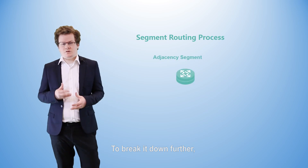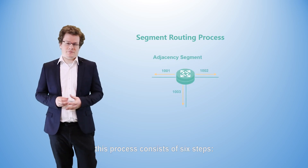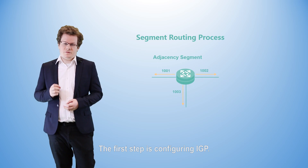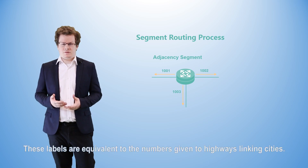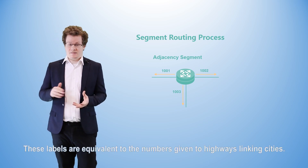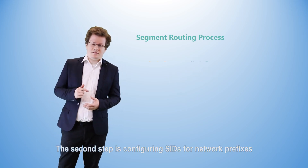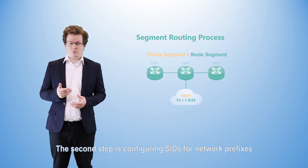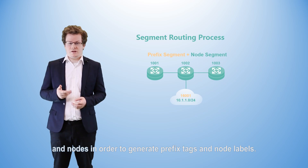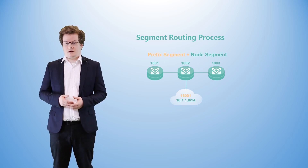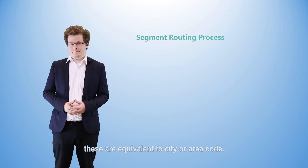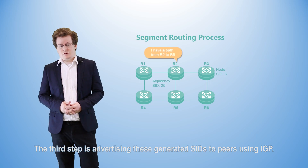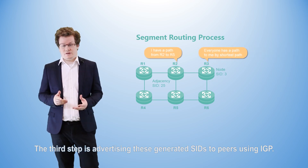To break it down even further, this process consists of six steps. The first step is configuring IGP. Links in the network are each allocated a SID in order to generate a link label. These labels are equivalent to the numbers given to highways linking cities. The second step is configuring SIDs for network prefixes and nodes in order to generate prefix tags and node labels. In the same metaphor, these are equivalent to city or area codes.